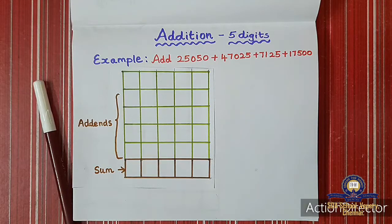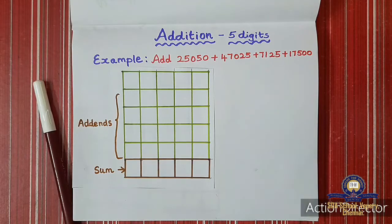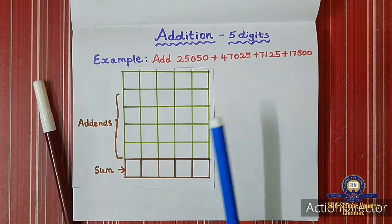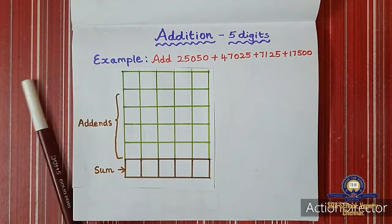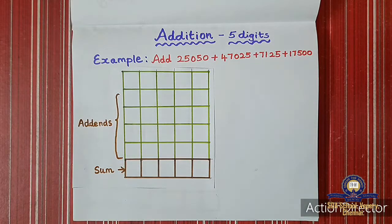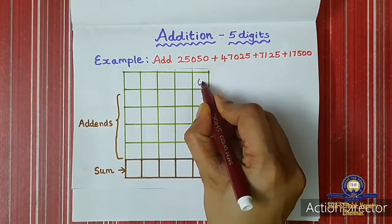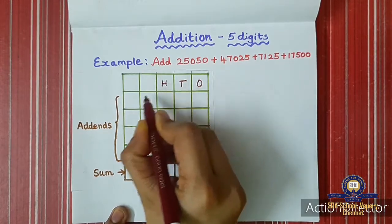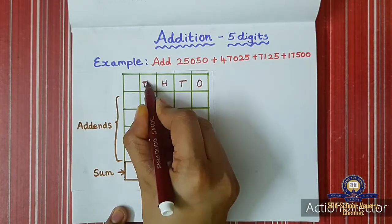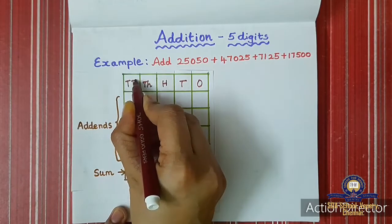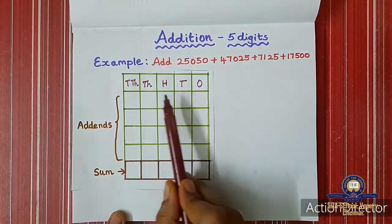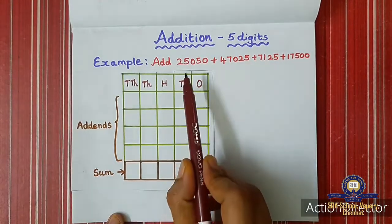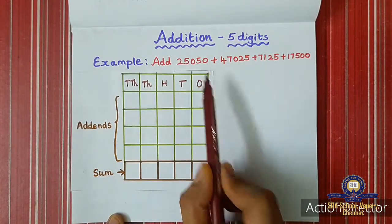Every time when writing a number, you should always start from the ones place to avoid mistakes. First we shall write the place values: ones, then tens, then hundreds, then thousands, then ten-thousands. This is the place value header: ones, tens, hundreds, thousands, and ten-thousands.